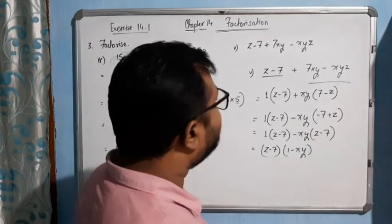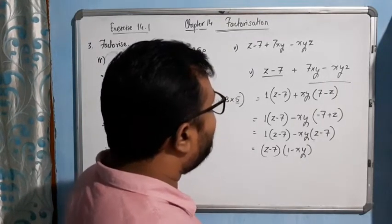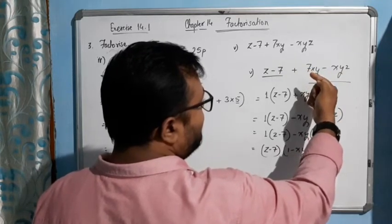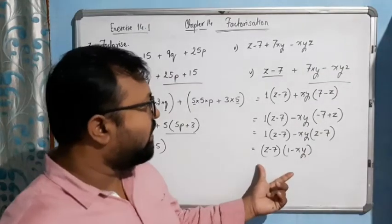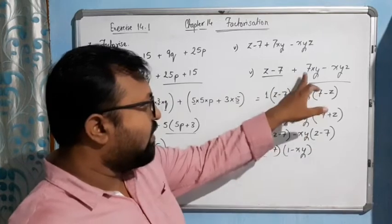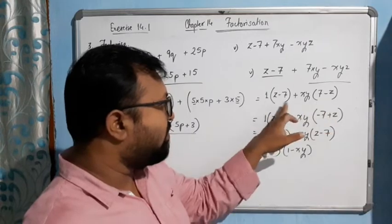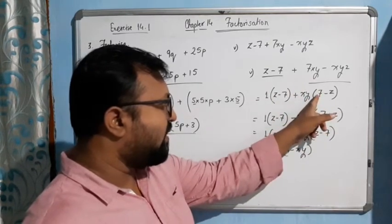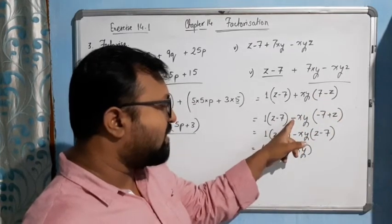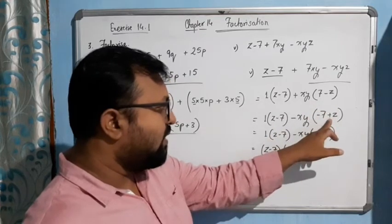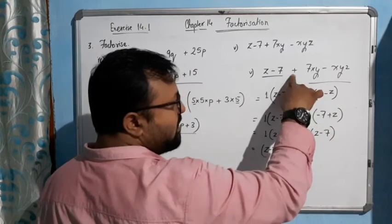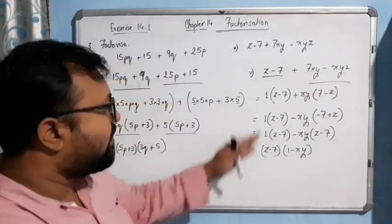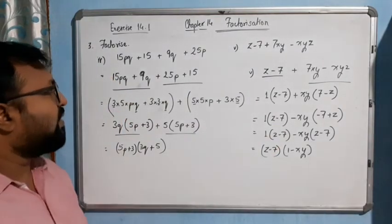Or we can do one more thing. This will be the appropriate way of doing it: Z minus 7 is simply there. You take XY common first, so it becomes 7 minus Z. But these two brackets are not matching, though the terms are the same — Z is there, 7 is there in both. The only thing we need to do is change the sign of both terms: 7 should be minus and Z should be positive. So instead of taking plus, we will take minus common. If we take minus common the sign will change — it becomes minus then plus. See, the result is the same: minus into minus gives plus 7XY, and minus into plus gives minus XYZ. Is that clear? So in this way you can take the common. I hope you have understood all the questions of question number 3. Thank you.